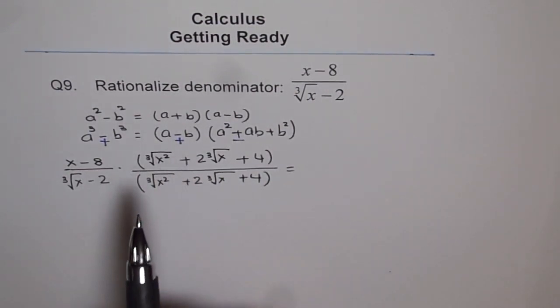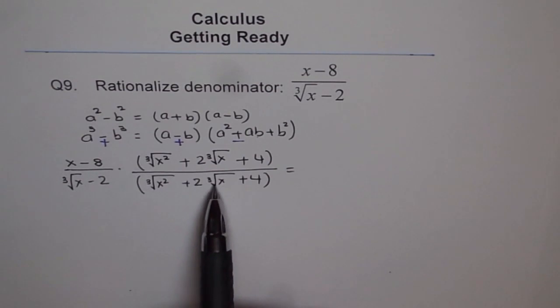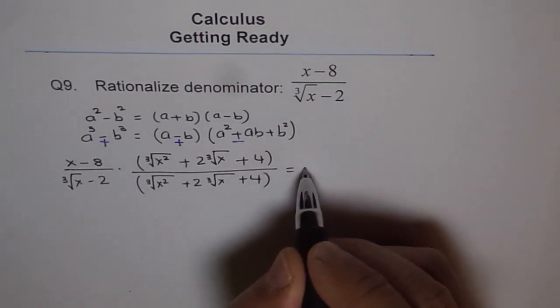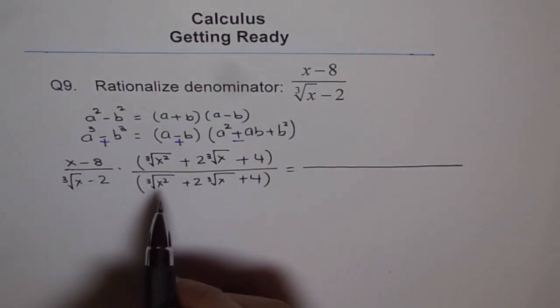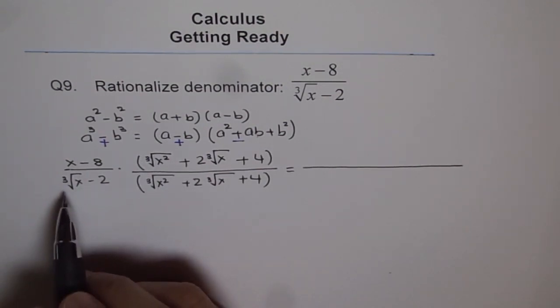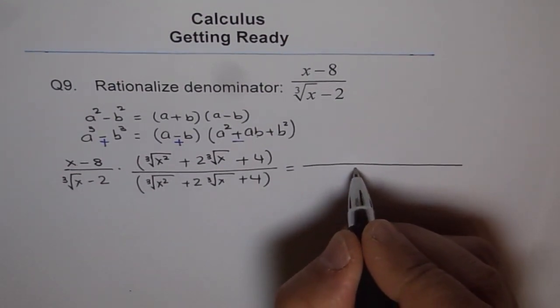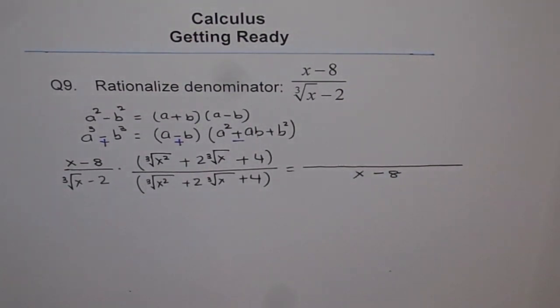Now, look at this formula. a minus b times a square plus ab plus b square should give you a cube minus b cube. Now, what is cube of this? Another thing which you need to remember is, you need to expand the part being rationalized. We have done all this, so that we get rid of this cube root. Let's expand that denominator part. In denominator, we are going to get a cube minus b cube. Cube of this is x, so we get x minus cube of 2, which is 8. That becomes your denominator.